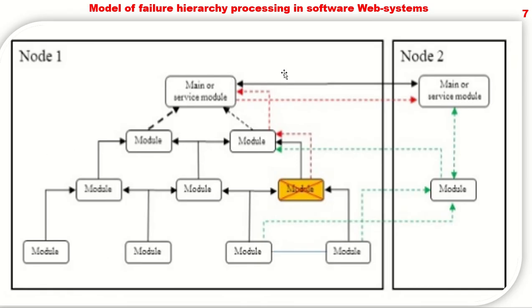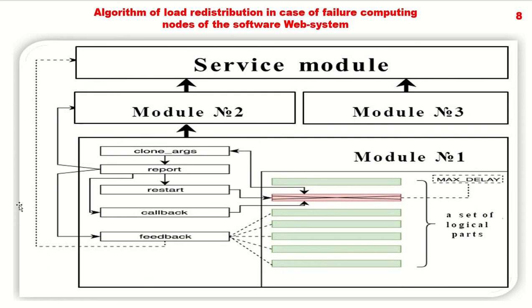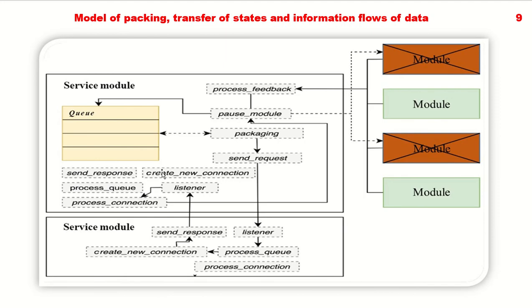We then present a model of file hierarchy processing in the software and web system, showing that we use fault-tolerant approaches. This demonstrates that we are able to calculate the new way of computation using indications of callback feedback, so we can select relevant logical paths and complete the initial task.